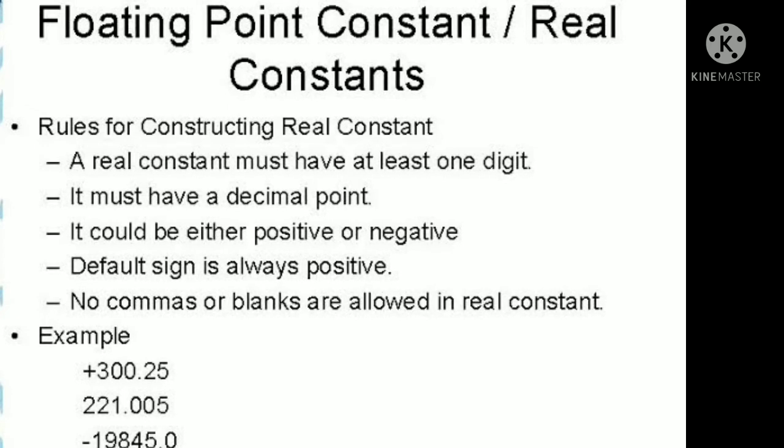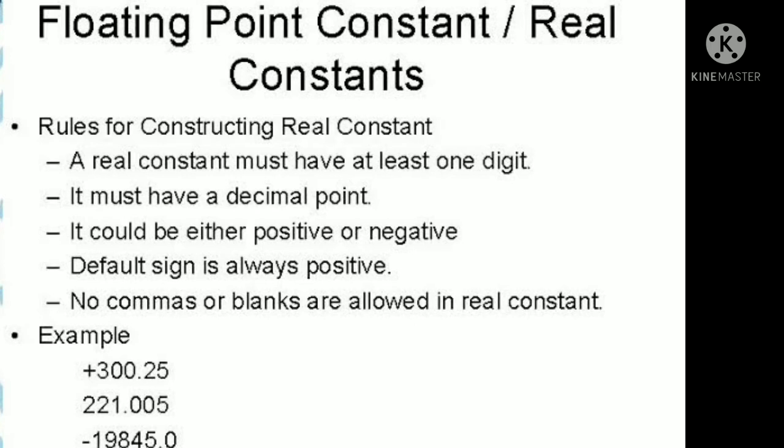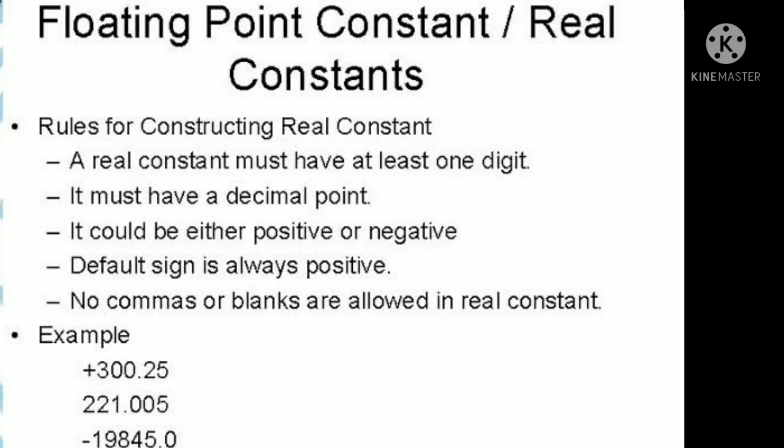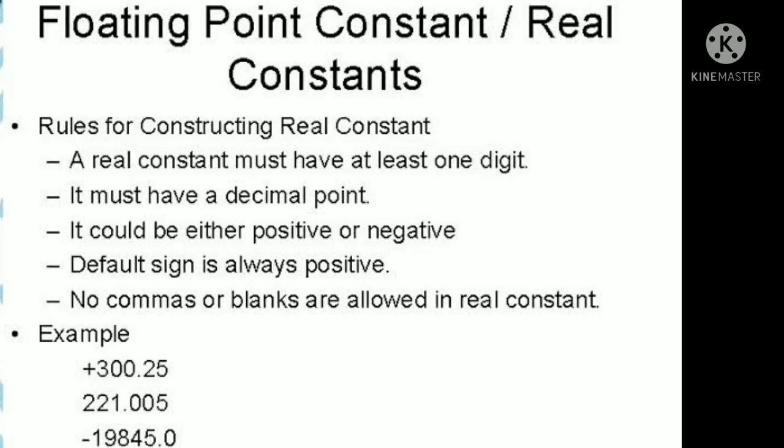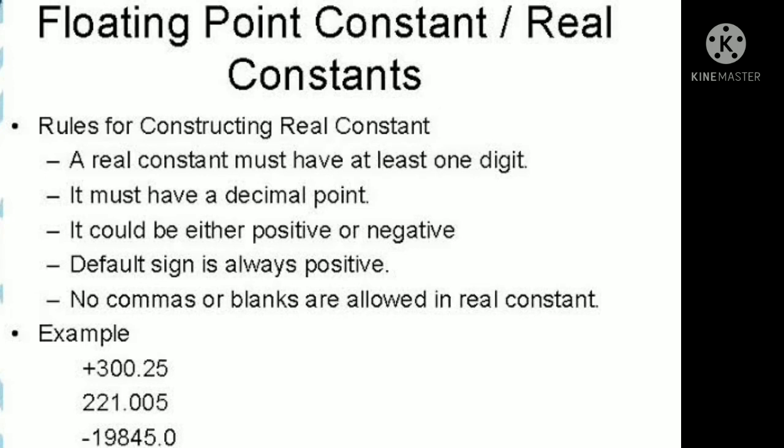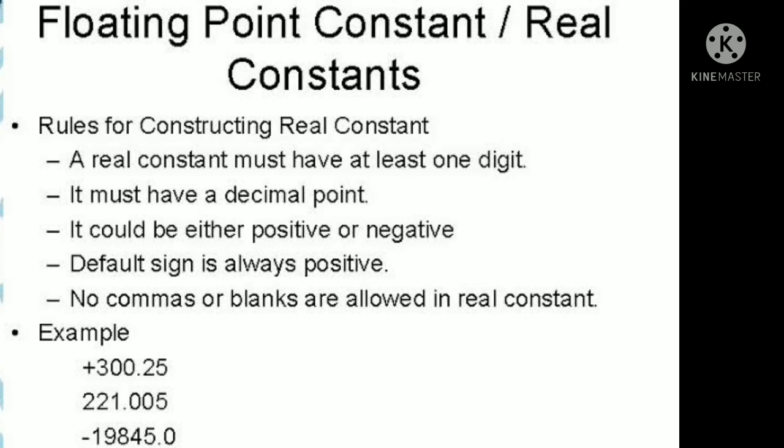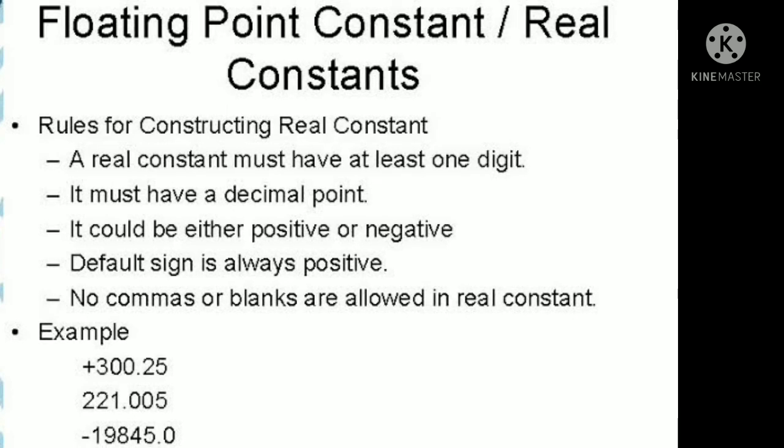Third rule is the exponent must have at least one digit which may be a positive or negative integer. Default sign is positive. Here we can see floating point constant or real constant examples.